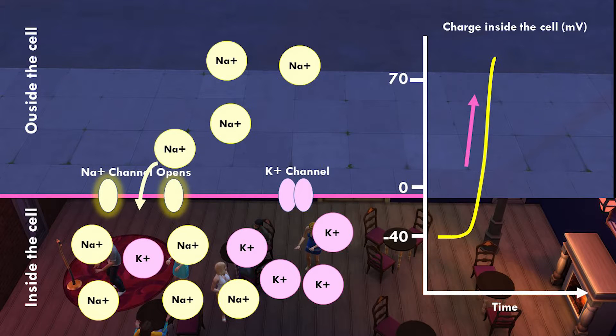By this point, a whole bunch of sodium ions are in the club dancing around, and the charge is actually positive now. So the current state of the cell is a really high positive charge.